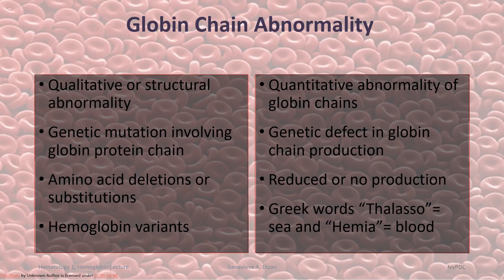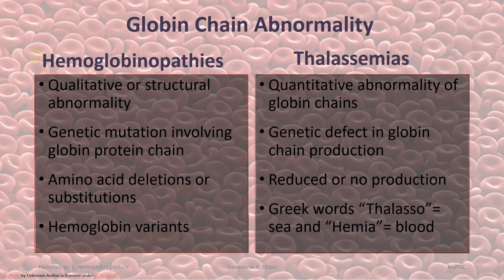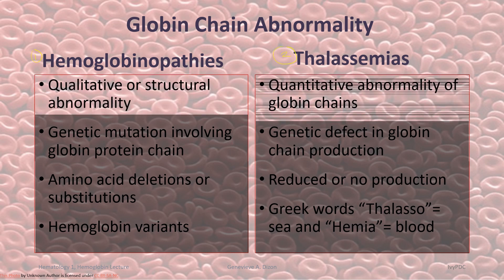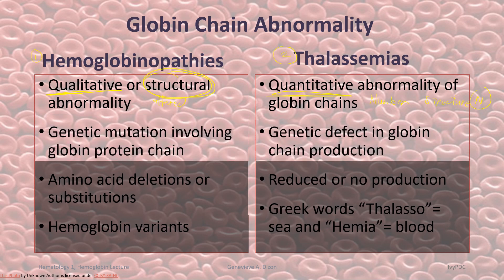The second type of abnormal hemoglobin involves the globin chain. For these, the heme portion is normal while the globin chain is abnormal, and there are two types: hemoglobinopathies and thalassemia. Hemoglobinopathies are qualitative abnormalities — structural abnormalities with an altered structure — while thalassemias are quantitative abnormalities. In thalassemia, the structure is normal; it is just that there are not enough globin chains. Both have genetic mutations and genetic defects.